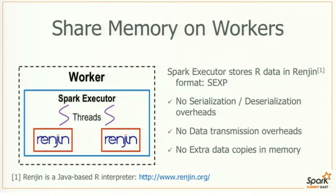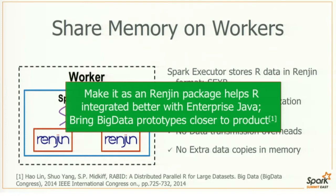In our environment, we're trying to replace the GNU R processes with Renjin. Renjin is a Java-based R interpreter. It is not yet fully compatible with GNU R, but it's one of the most compatible implementations. We store the R data in Renjin format — S expressions — by creating multiple threads inside the Spark Executor, eliminating serialization issues, data transmissions, and data copies. And if we pack everything into a Renjin package, it benefits enterprise users because all R applications are packed into Java and Scala code, bringing big data prototypes closer to products.